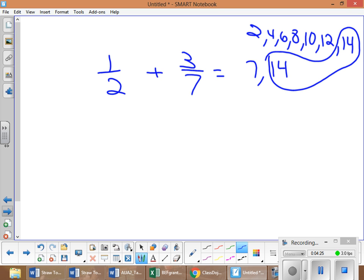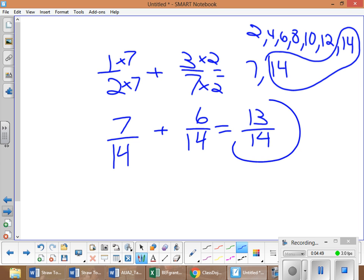We're going to make this fourteen and this one a fourteen. Our plus sign's in the middle. I know two times seven equals fourteen, so times seven here we have seven-fourteenths. Then seven times two equals fourteen, so three times two equals six. This one's really close to a whole because seven plus six is thirteen, and thirteen-fourteenths - we are very, very close to a whole number right there.